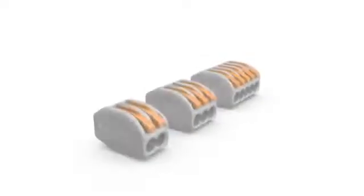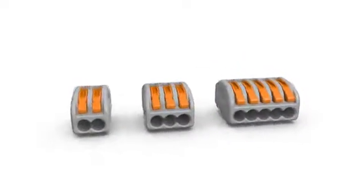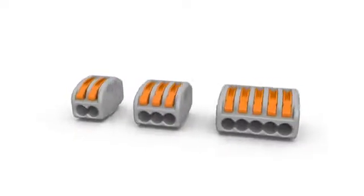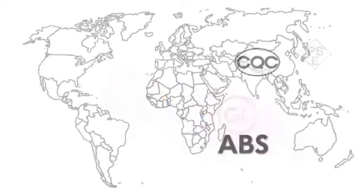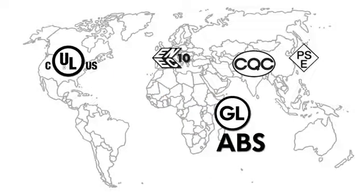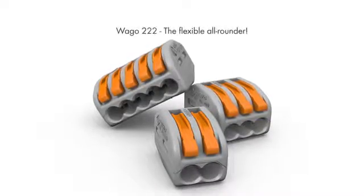The 222 series portfolio includes two, three, and five conductor compact connectors. These three variants enable diverse applications beyond buildings. The compact connectors have globally recognized certifications for use in building installations. They have also been designed and improved for applications with increased vibration resistance requirements such as shipbuilding and railway technology. WAGO 222, the flexible all-rounder.